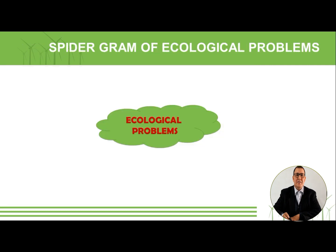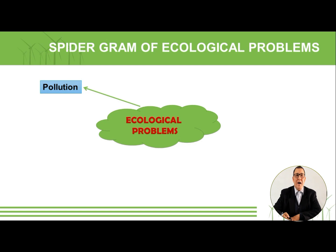Let's move on to another activity. Here we have a spider diagram about ecological problems. Can you suggest some problems related to ecology? The first one is pollution — with its different types: water, land, noise, and air pollution. Another problem related to ecology is deforestation.